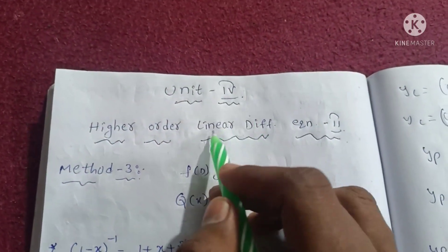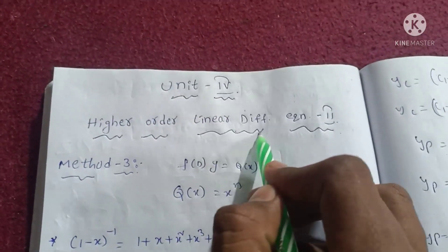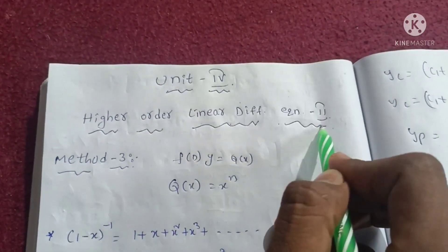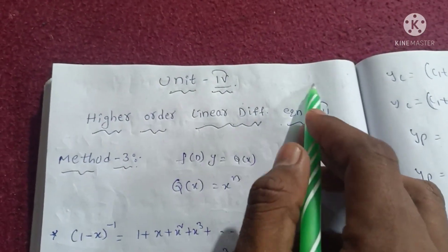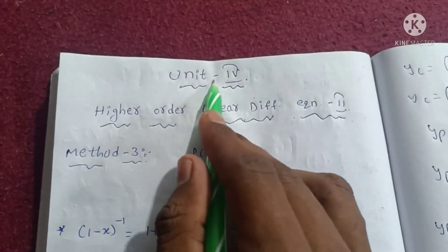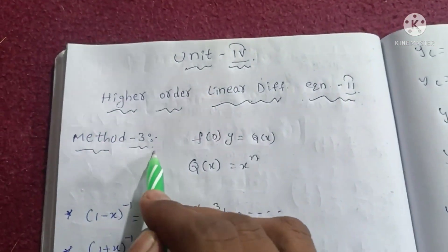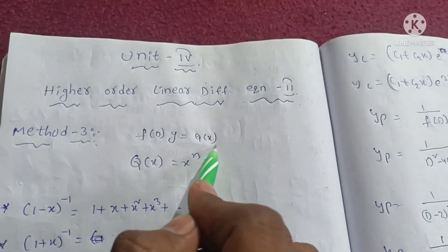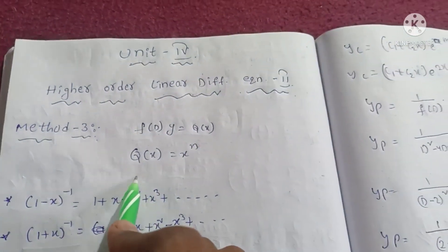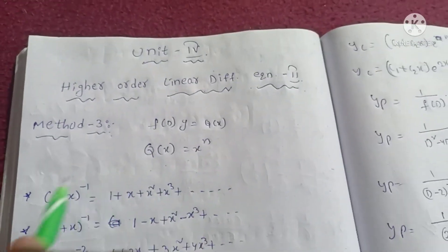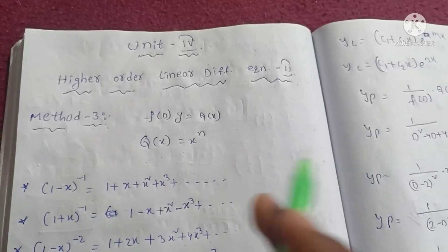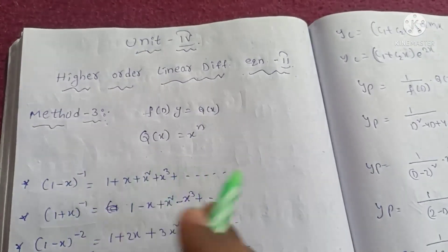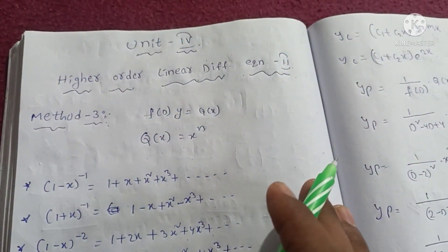Unit 4: Higher-order linear differential equations. When f(D)y = Q(x) and Q(x) = x^n, the complementary solution method is the same as before — yc is found as usual — and yp will be done using a specific form.